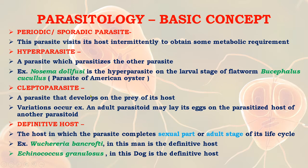A kleptoparasite is a parasite that develops on the prey of its host. An example is when an adult parasitoid lays its eggs on the parasitized host of another parasitoid.